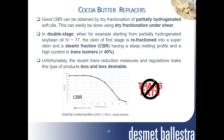Good cacao butter replacers can be obtained by dry fractionation of partially hydrogenated soft oils. This can easily be done using dry fractionation under shear in a double stage when starting, for example, from partially hydrogenated soybean oil. The second sterin fraction has the properties of a good cacao butter replacer with a steep melting profile, but a high content of trans isomers. Unfortunately, recent trans fat reduction regulations make this type of product less and less desirable.